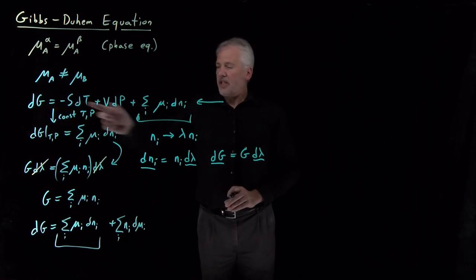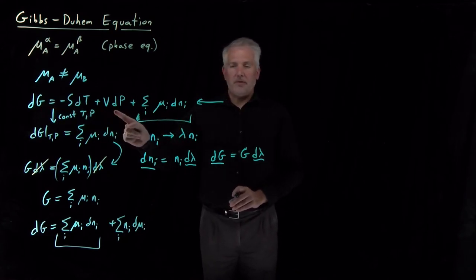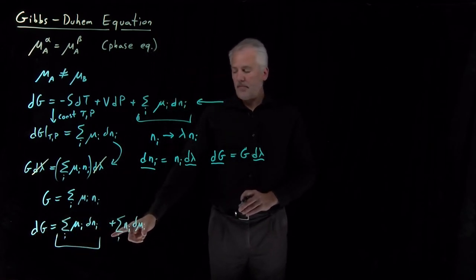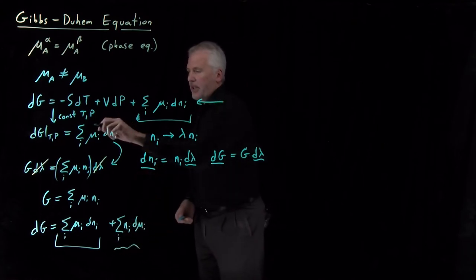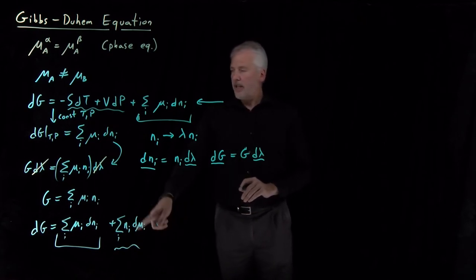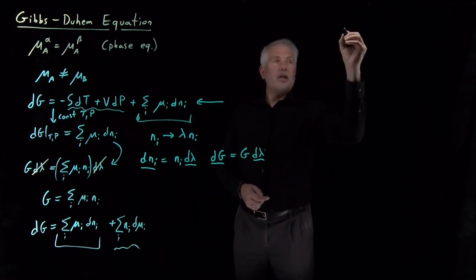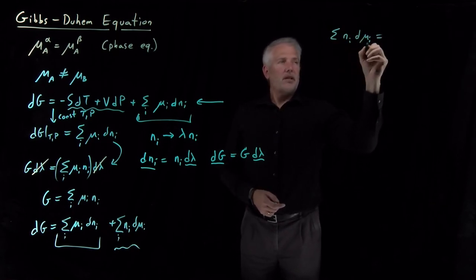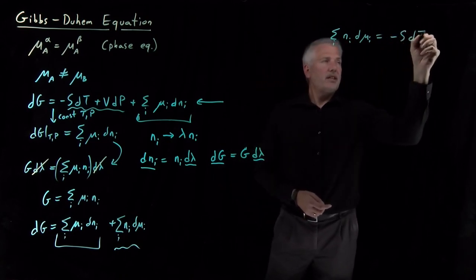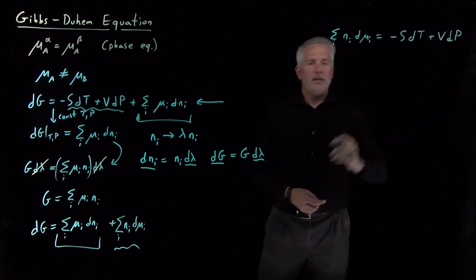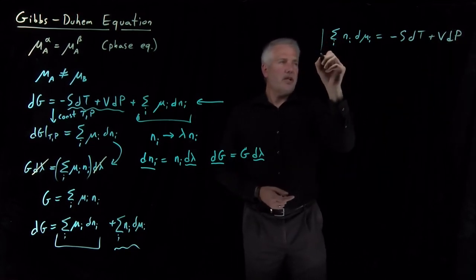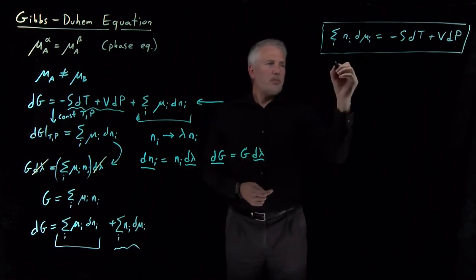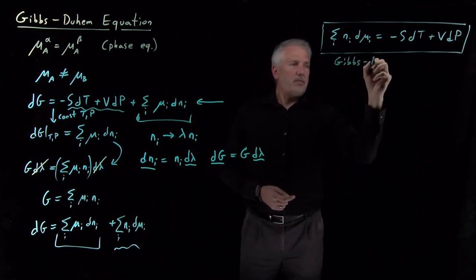Our fundamental expression says dG equals the sum of μ dn plus terms involving T and P. Our new differential expression says dG equals that same sum plus a different term involving n dμ. Setting these equal, the μ dn terms cancel, and we obtain: the sum of nᵢ dμᵢ equals minus S dT plus V dP. That result is important enough to have a name — it is the Gibbs-Duhem equation.